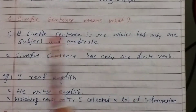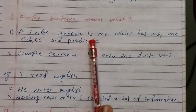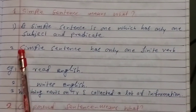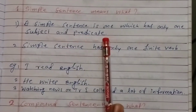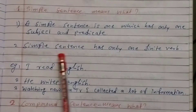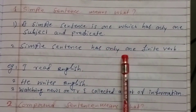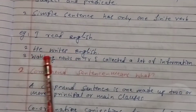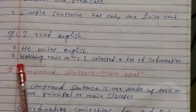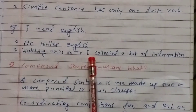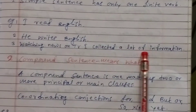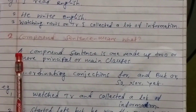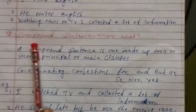A simple sentence has only one subject and predicate, and only one finite verb. Examples: 'I read English,' 'He writes English,' 'Watching news on TV, I collected a lot of information.'